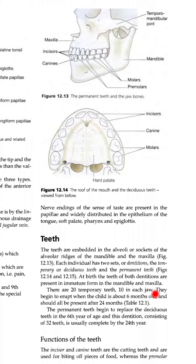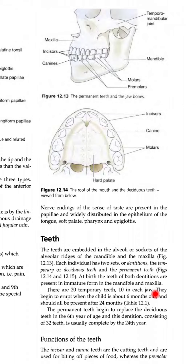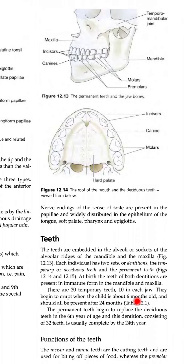जो teeth होते हैं, birth के time पे जो teeth निकलते हैं वो temporary होते हैं। वो थोड़े time बाद निकल जाते हैं। But there are 20 temporary teeth — जो birth के time से लेके teenagers तक होते हैं — 10 in each jaw, उपर और नीचे दोनों में। They begin to erupt when the child is about 6 months old.